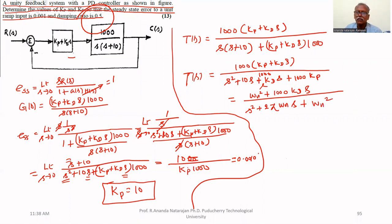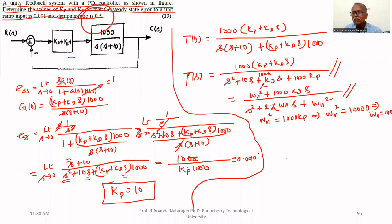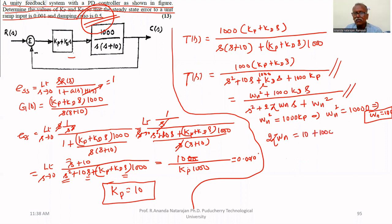Comparing the characteristic equation, omega_n squared equals 1000 times Kp. This implies omega_n squared equals 10,000, so omega_n equals 100. Since zeta is given as 0.5, comparing the s term: 2 times zeta times omega_n equals 10 plus 1000·Kd.